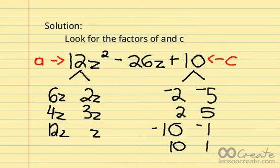The factors of 12z squared are 6z and 2z, 4z and 3z, 12z and z. The factors of 10 are negative 2 and negative 5, 2 and 5, negative 10 and negative 1, and 10 and 1.